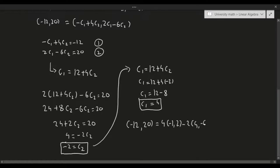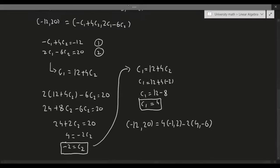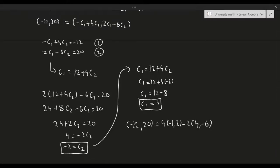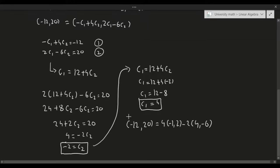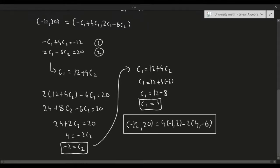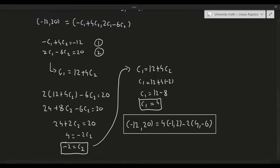So yes, we can write this as a linear combination: (-12, 20) = 4 times (-1, 2) minus 2 times (4, -6). That is our final answer. Now let's go ahead and talk about a more complicated example.